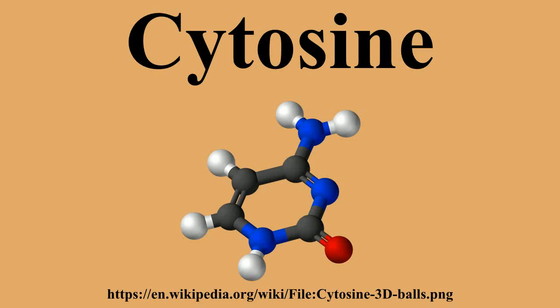NASA scientists reported that, for the first time, complex DNA and RNA organic compounds of life, including uracil, cytosine and thymine, have been formed in the laboratory under outer space conditions, using starting chemicals such as pyrimidine, found in meteorites.